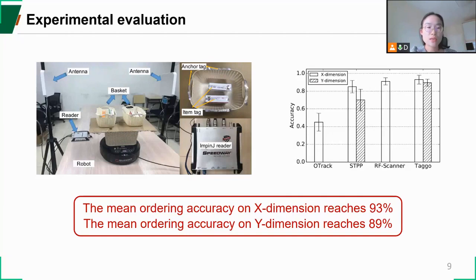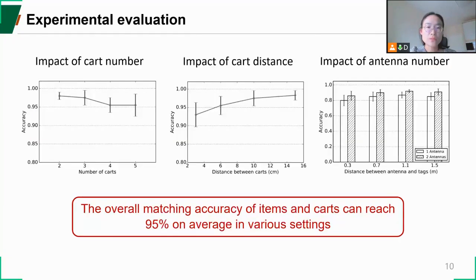We first evaluate the tag ordering accuracy and compare our work with related literature. The mean accuracy can reach 93% on x-dimension and 89% on y-dimension. Besides, to evaluate the robustness of our system in different settings, we change the number of carts, the distance between carts and also experiment on different models of tags. Results show that the overall matching accuracy of items and carts can reach 95% on average in various settings.